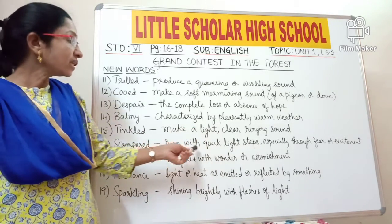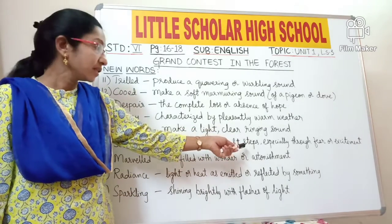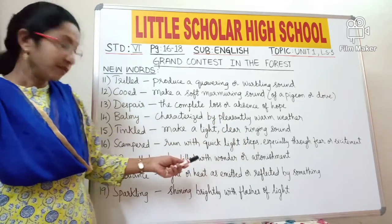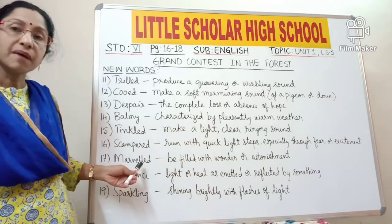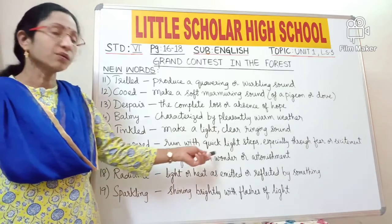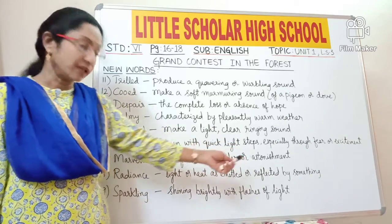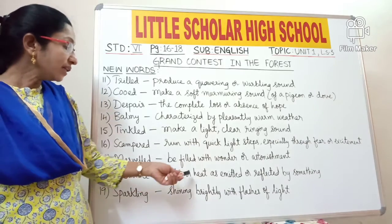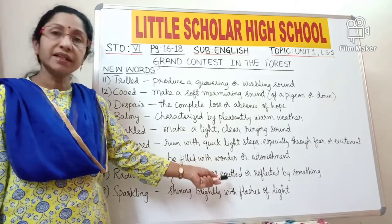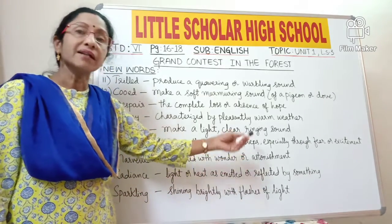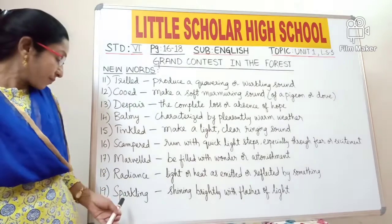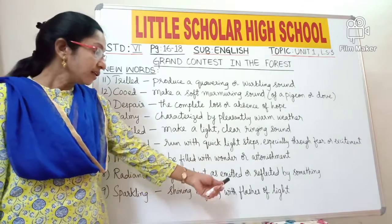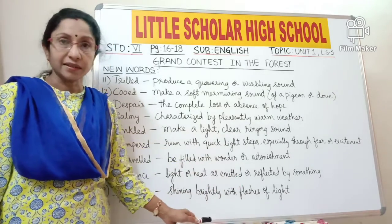Scampered — to run with quick light steps, especially through fear or excitement. Marvelled — to be filled with wonder or astonishment. Radiance — light or heat as emitted or reflected by something. Sparkling — shining brightly with flashes of light.